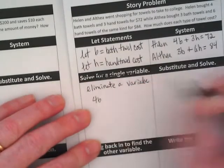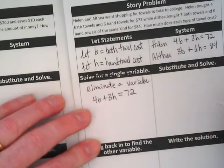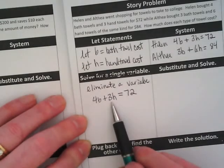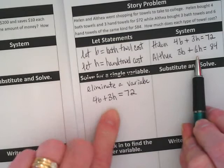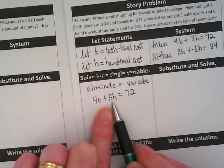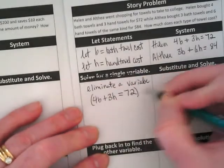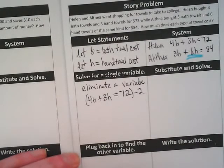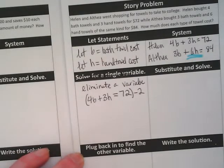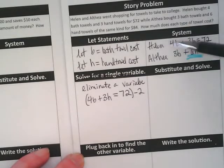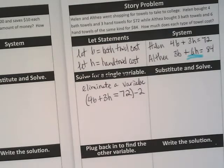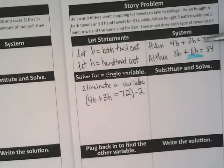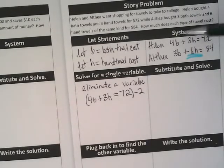I'm going to take 4B plus 3H equals 72, or basically what Helen's receipt looked like. And I'm going to turn this 3H into a negative 6H. Why? Because Althea has a positive 6H. And I'm looking at this going, if I multiply this by negative 2, I'm going to get a negative 6H. So, this whole equation has to be multiplied by negative 2. Why? Because I am focusing on this term right here and trying to eliminate it. I'm trying to get an opposite of that one. I just picked that one because I thought these two looked easier to multiply and change than these two.